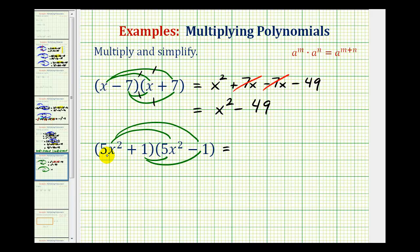So five x squared times five x squared, that would be twenty-five x to the fourth. Next we have five x squared times negative one, that'll be minus five x squared.